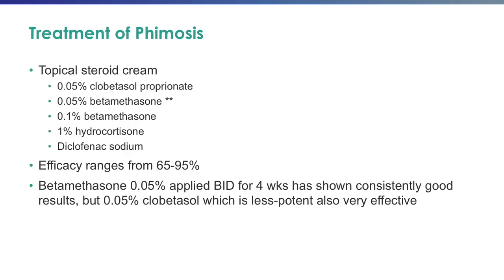When faced with a symptomatic child with a non-retractable foreskin, the recommended treatment is first a trial of a topical steroid cream. I typically use 0.05 percent topical betamethasone. Efficacy rates range from 65 to 95 percent. One applies the cream to the phimotic ring — the area of contracture that limits retraction — twice a day for four weeks and then reassess the response. Clobetasol is another effective topical steroid option.